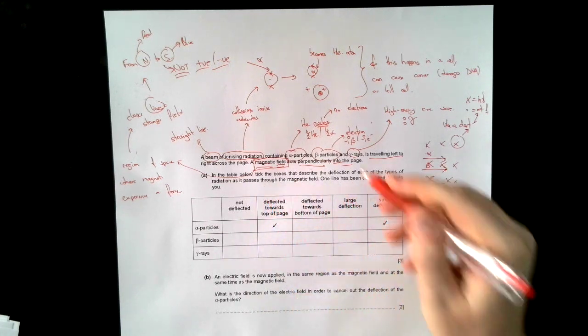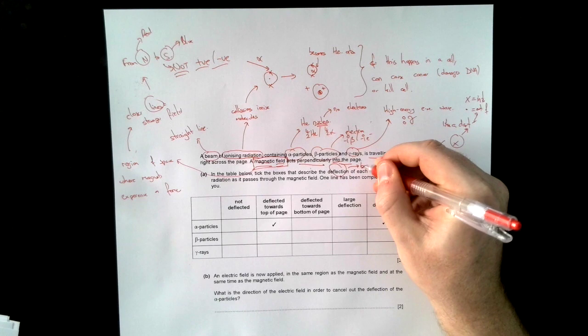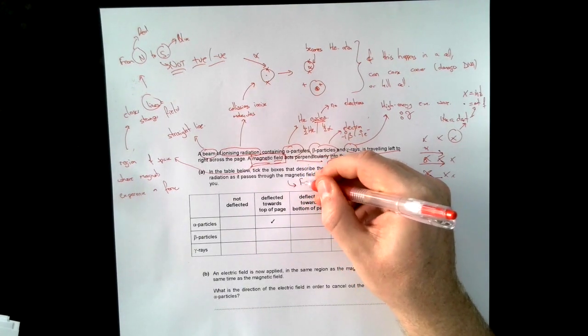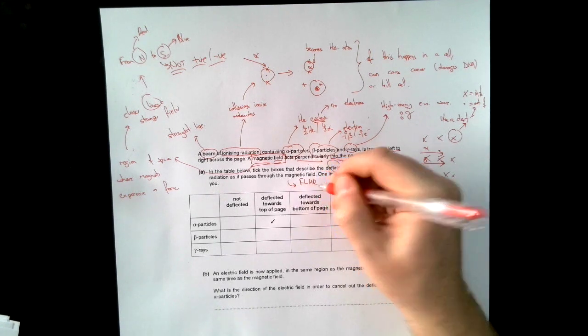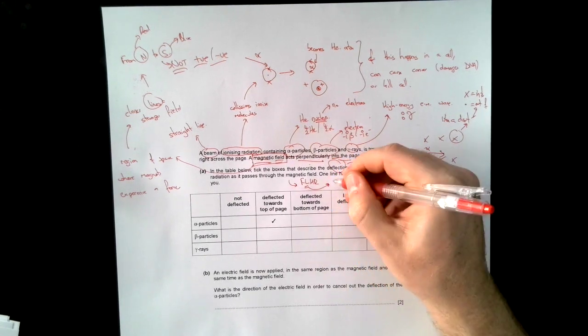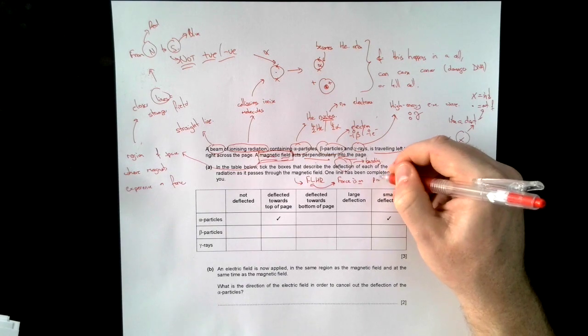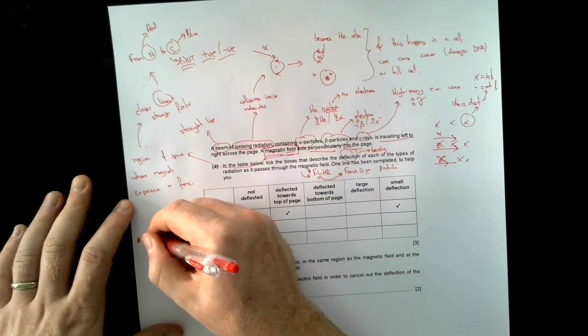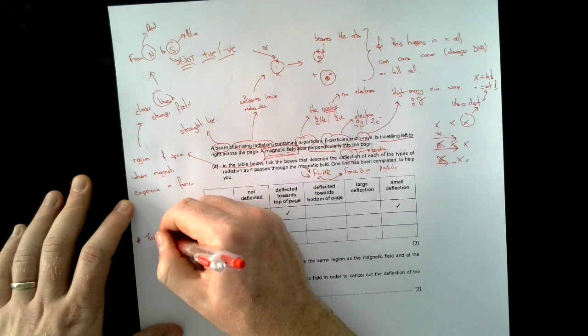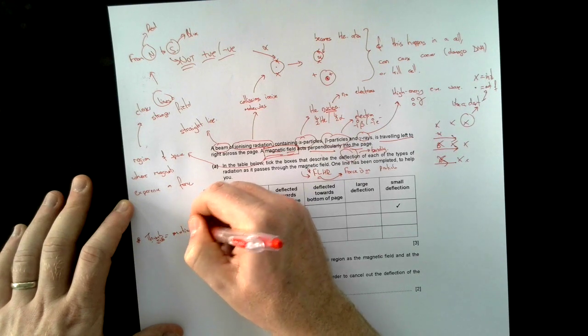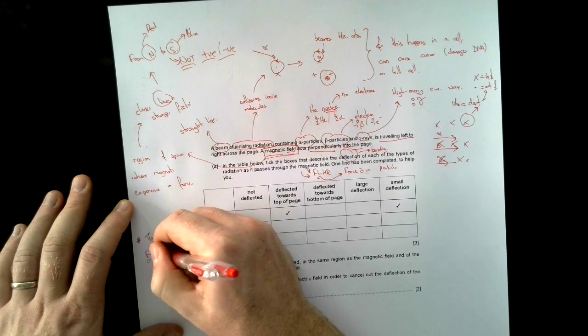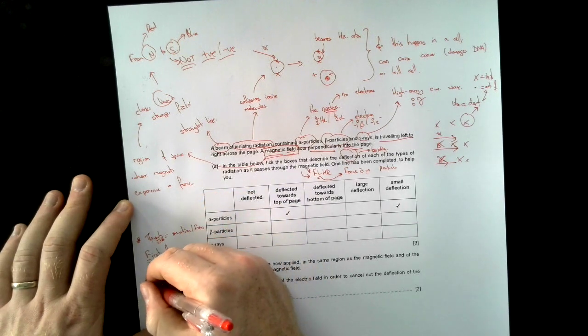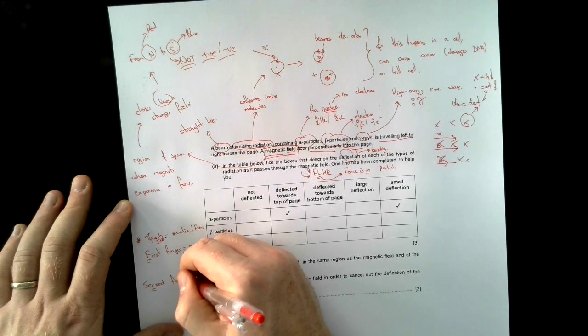In the table below, tick the boxes that describe the deflection. I might remember that deflection means bending. Of each of the types of radiations as it passes through the magnetic field. So to do this, I'm going to have to use Fleming's left-hand rule. Why left? Well, I can remember it's left because force is on the particle. When I'm also remembering this, I could remember that the thumb is the motion or the force. First finger is the magnetic field.